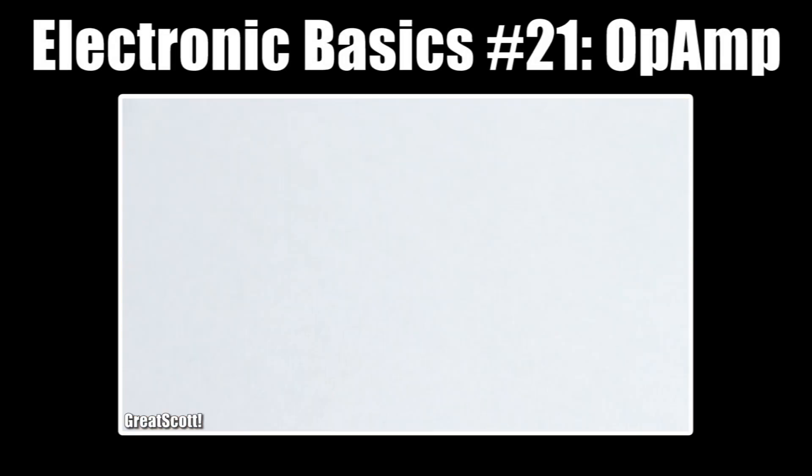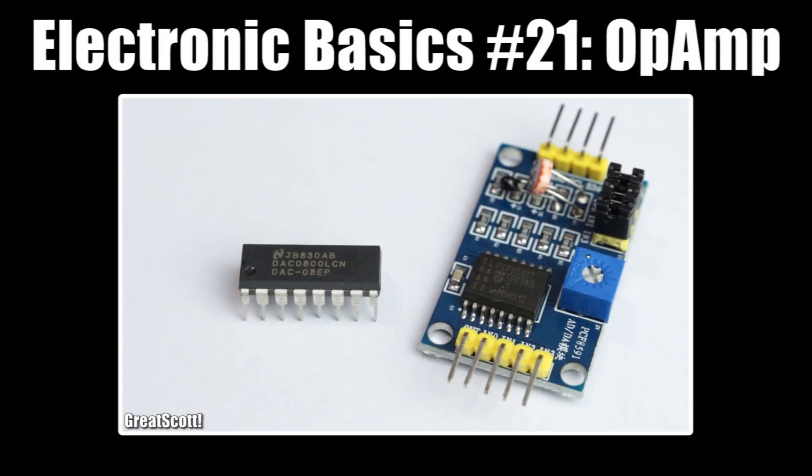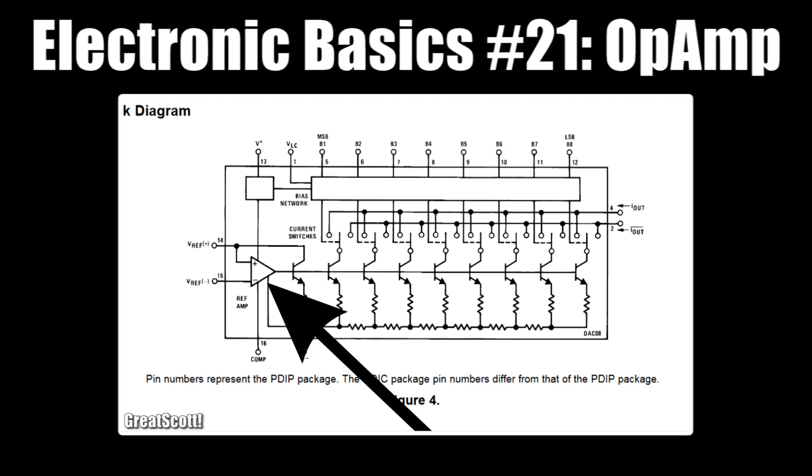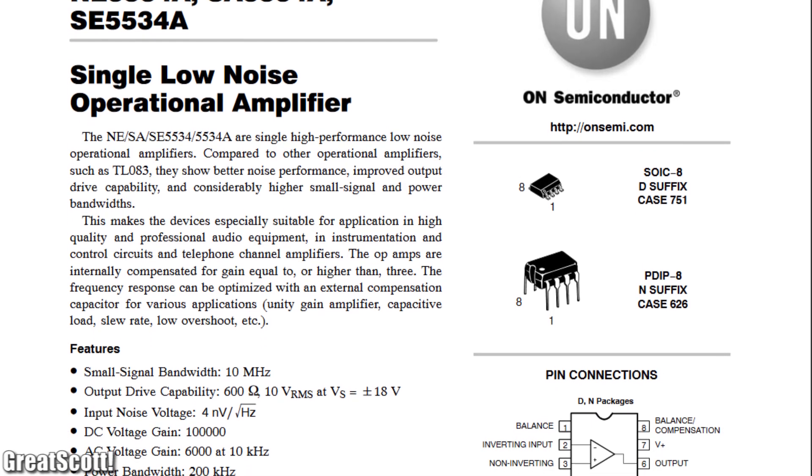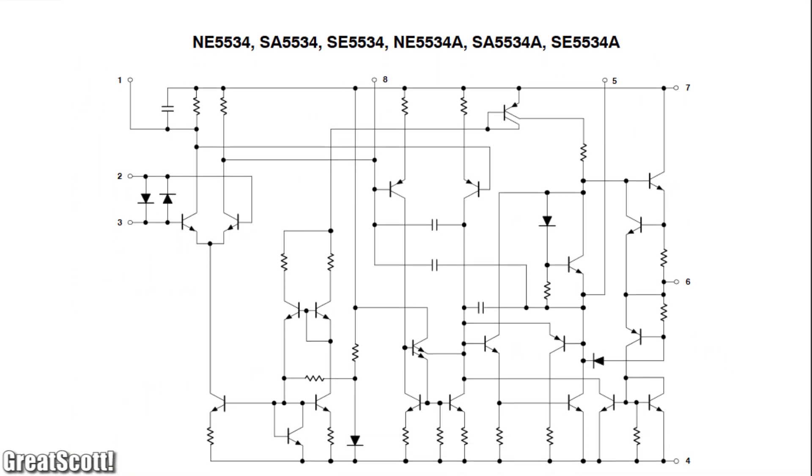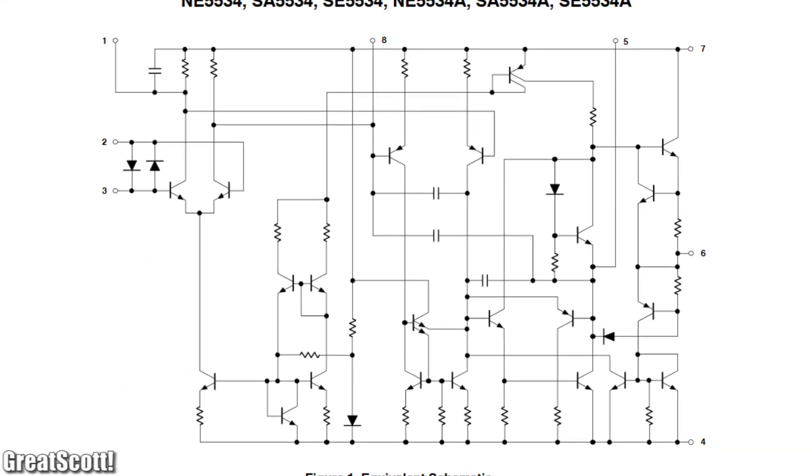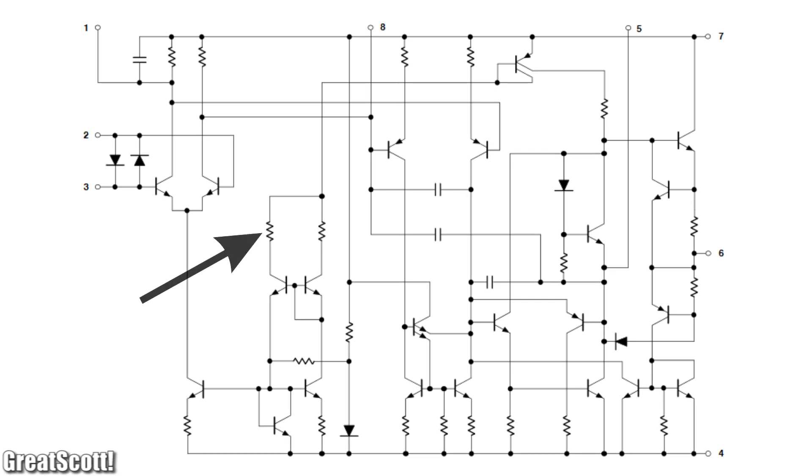In my previous basics video, I showed you that many ICs consist of at least one op-amp. But if we go even deeper and inspect the schematic of an op-amp itself, we can see familiar components like resistors, capacitors, and diodes.